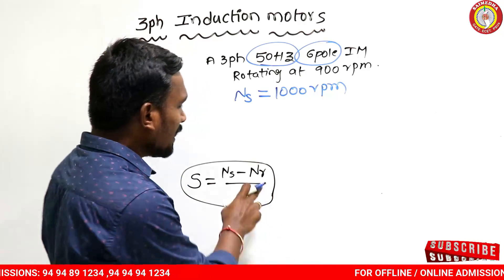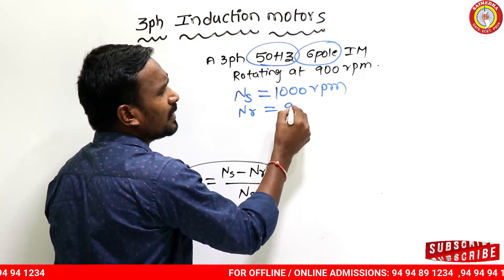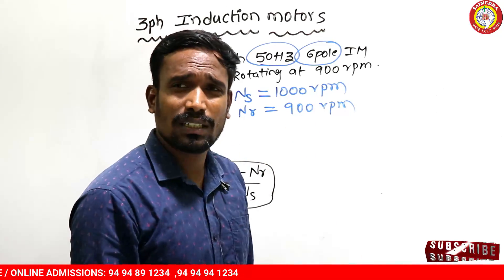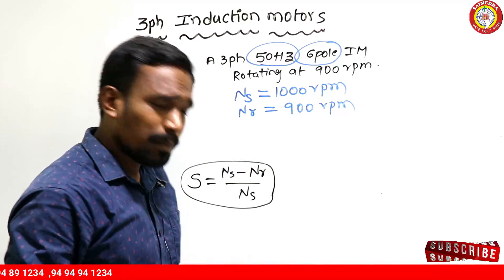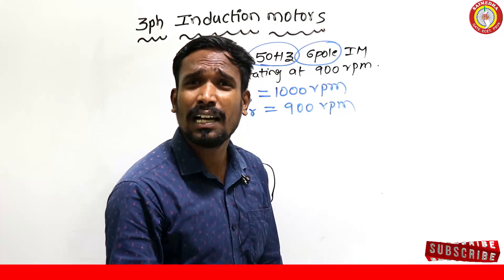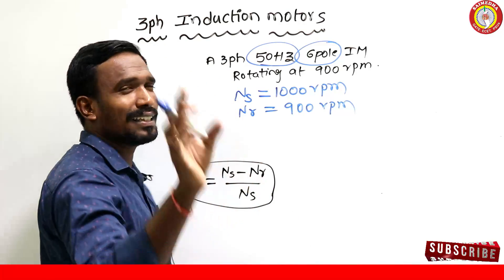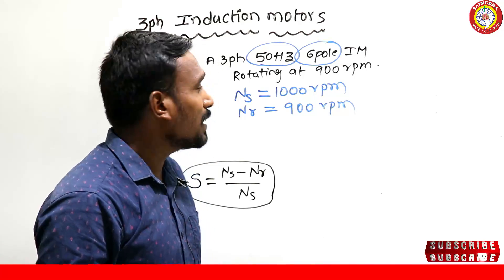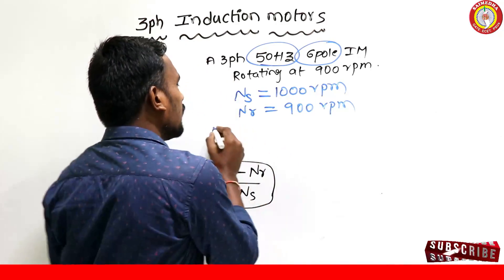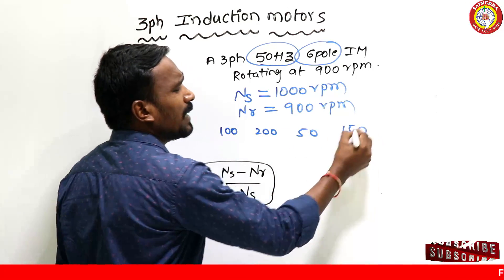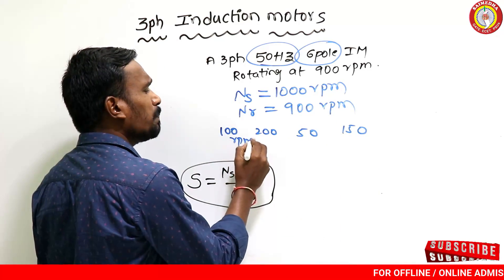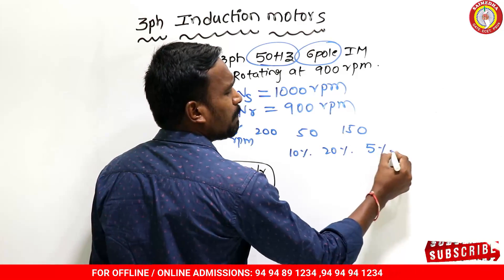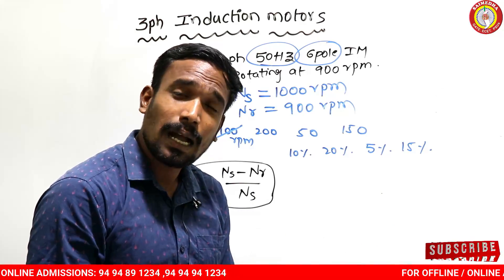The rotor speed Nr is 900 RPM. The synchronous speed is 1000, but the motor runs at 900. Why? Because as the rotor rises and catches up with the field, the flux linkage reduces. How to find slip? The options are 200, 150, 100 RPM slip — or in percentage: 10%, 20%, 5%, 15%. What is the slip percentage?